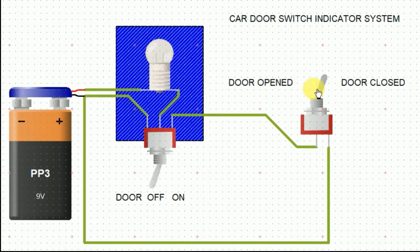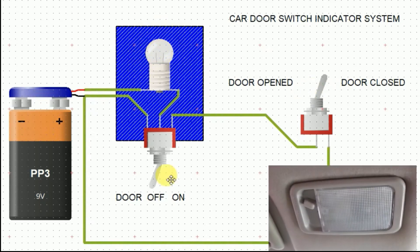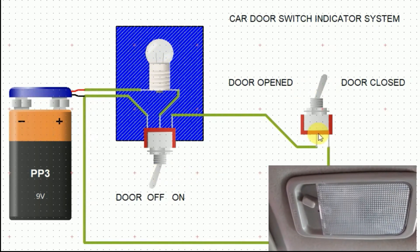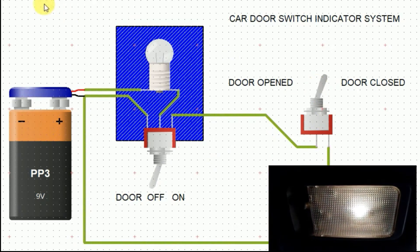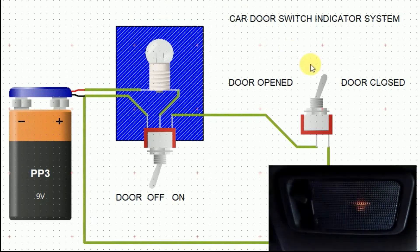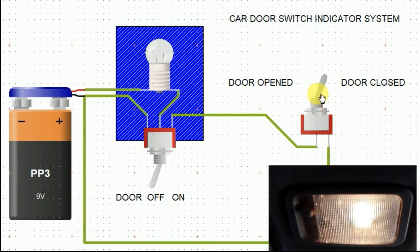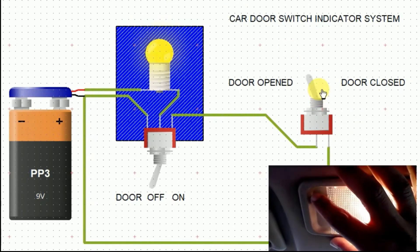When the dome switch is in the door position and the doors are closed, the dome light is off as the circuit is open. But when a door is opened, that circuit is closed and then the light turns on.